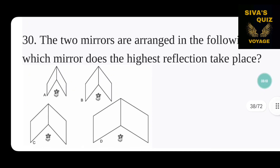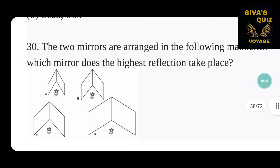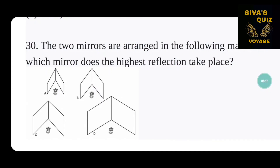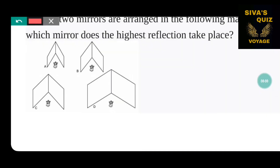The two mirrors are arranged in a certain manner — in which arrangement does the highest reflection take place? The answer relates to the angle between the mirrors. The minimum angle gives the highest number of reflections. Two clear angles, not a minimum angle — that gives the highest reflection.